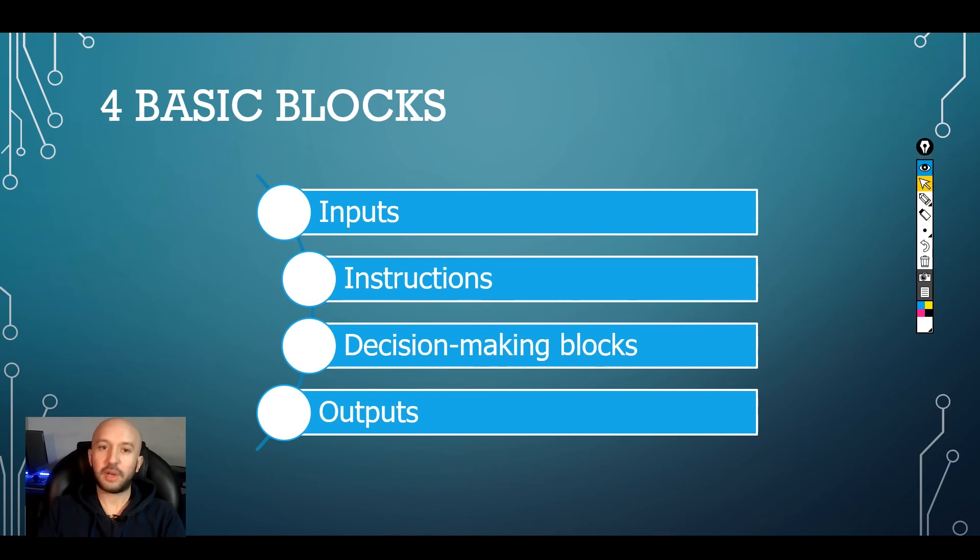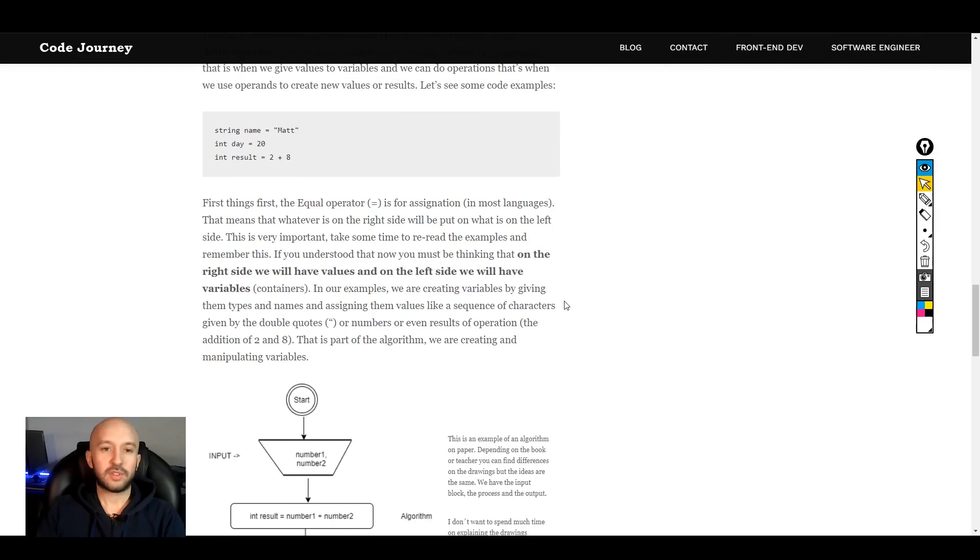That's a good idea about inputs, instructions, decision-making blocks, and outputs. I want to show you from my blog called Cherni. You can have the link in the description below if you want to read more about any of these topics. In here, you can see an example of an algorithm.